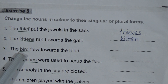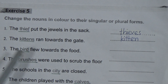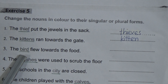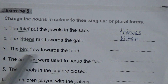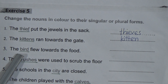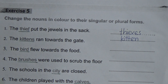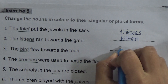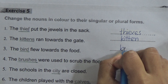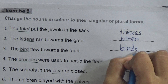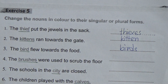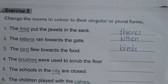Number three: the _bird_ flew towards the road. The word bird is in singular form, so we will change it to plural. Bird — B-I-R-D — and we add S to make it plural. So it will be birds — B-I-R-D-S. Usually we add S or DS to make the noun plural.